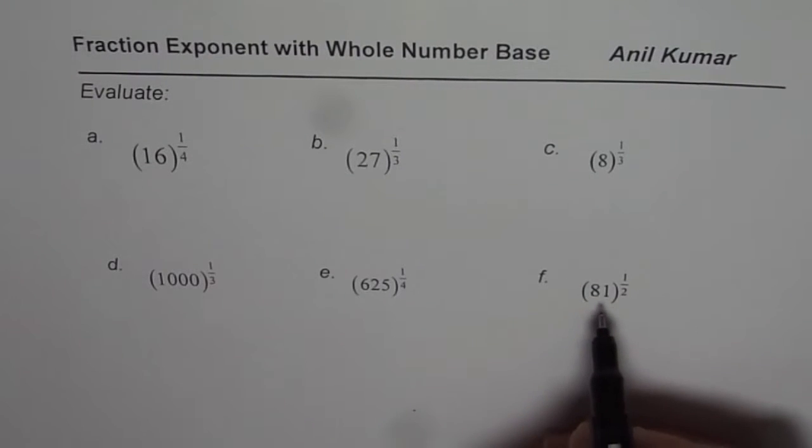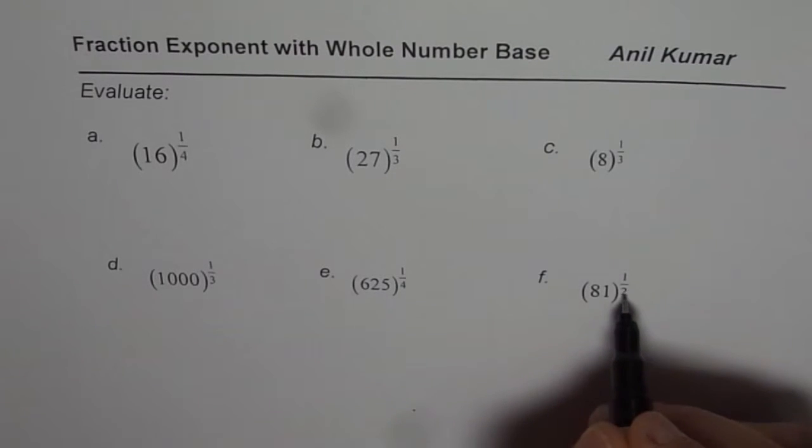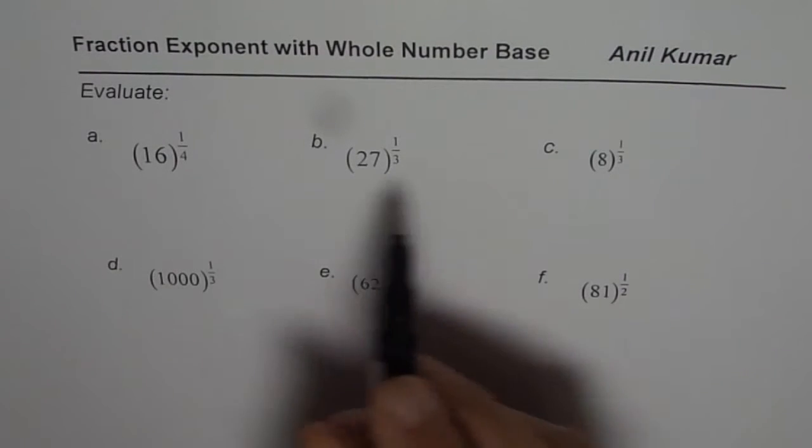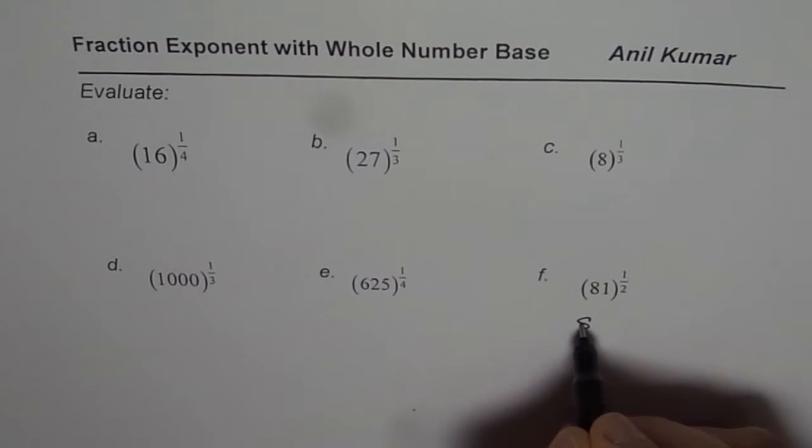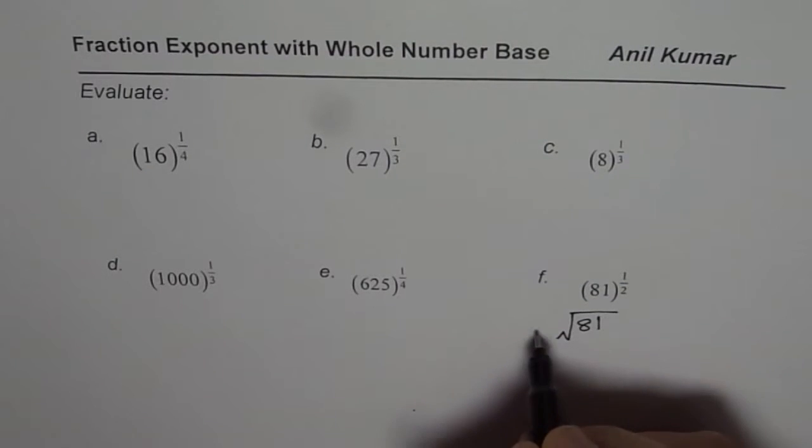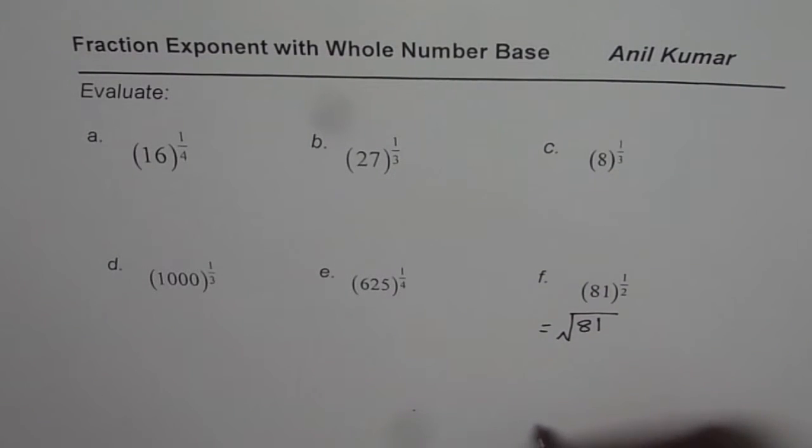Now, let me begin with 81 to the power of 1 over 2. 1 over 2 means square root. All these are radical expressions. 1 over 2 means square root. So, you could also think about this number as square root of 81. That is what it is.